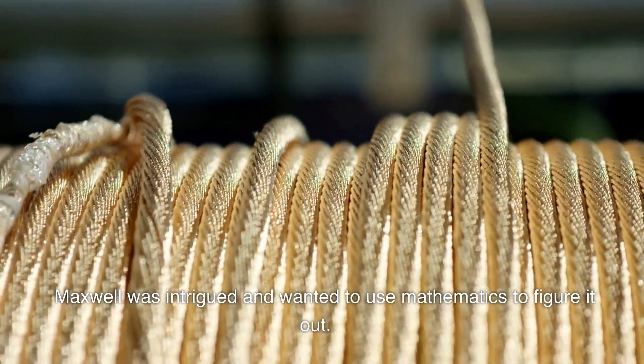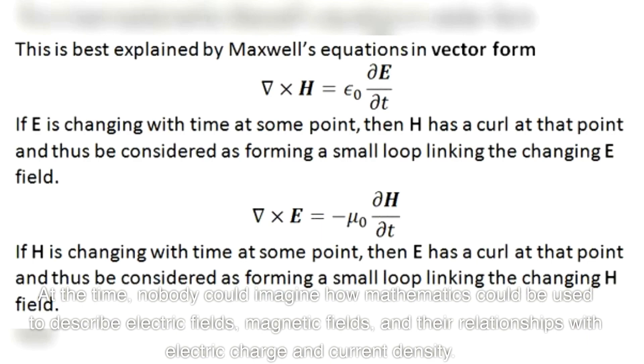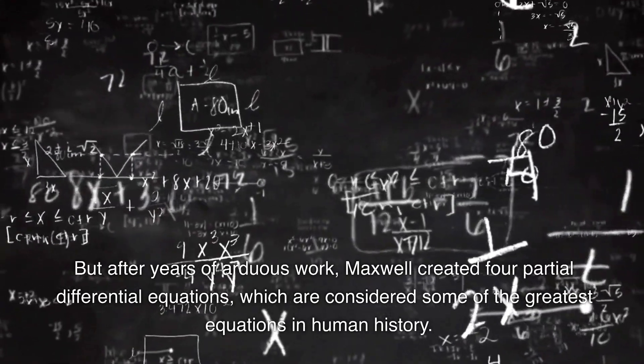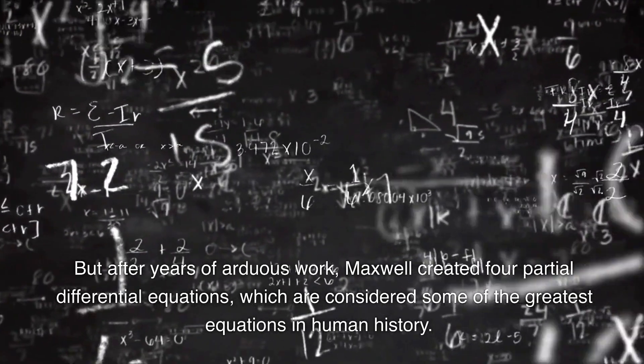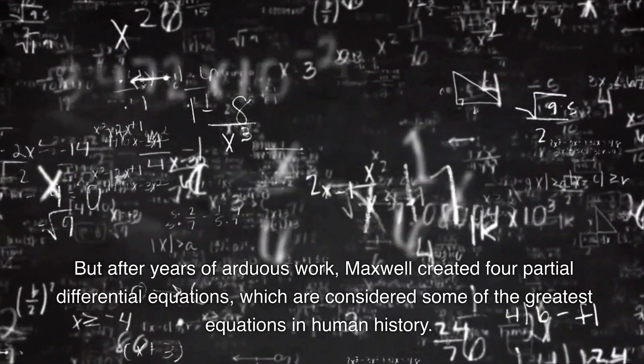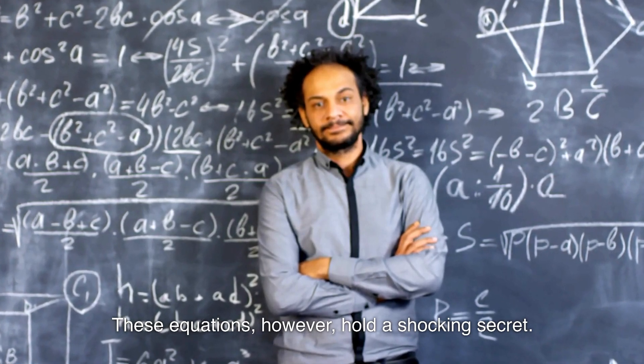Maxwell was intrigued and wanted to use mathematics to figure it out. At the time, nobody could imagine how mathematics could be used to describe electric fields, magnetic fields, and their relationships with electric charge and current density. But after years of arduous work, Maxwell created four partial differential equations, which are considered some of the greatest equations in human history. These equations, however, hold a shocking secret.